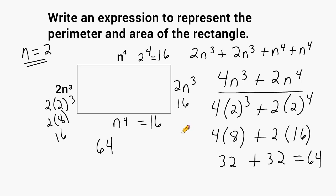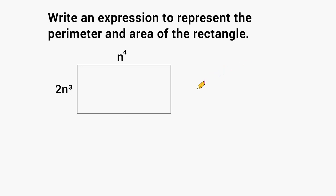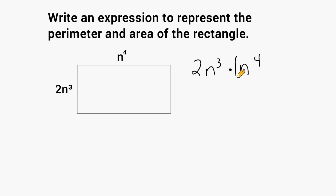Now we need an expression for the area of this rectangle. To find the area of any rectangle, we multiply the length by the width. The length is 2n to the third power and the width is n to the fourth power. The coefficient of 2n³ is two, and the coefficient of n⁴ is one. We multiply the coefficients — two times one equals two — and for the variables we add the exponents: n to the third times n to the fourth is n to the seventh. So the area expression is 2n⁷.